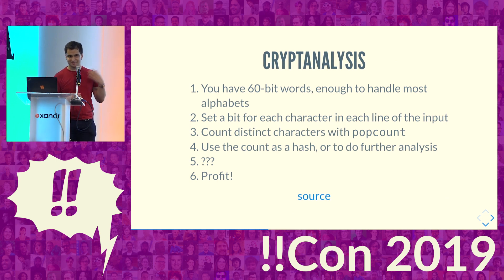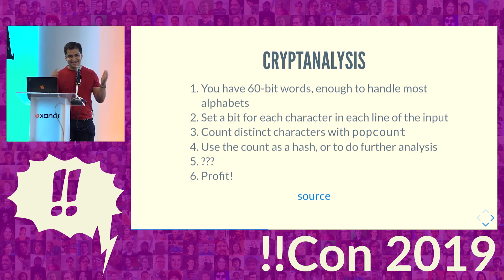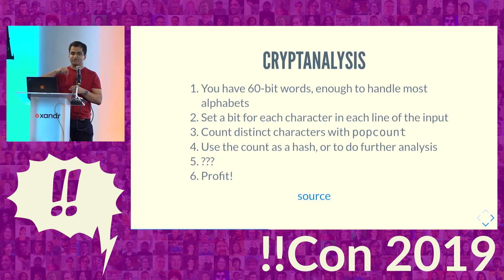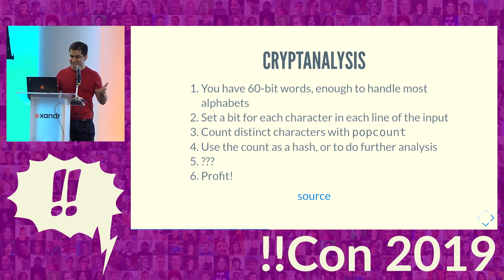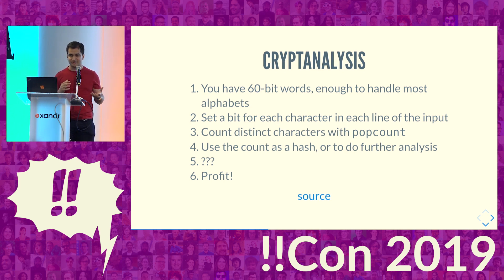This is all rumors and speculation — I have no idea what the NSA actually did with this instruction. But a source I read said it would take an encrypted message, split it into lines, and for each line count the number of distinct characters by setting a bit in a word. The CDC 6000, which had 60-bit words, was one of the machines used. It would do a pop count to figure out how many characters there were, and use that as a hash or for further cryptanalysis.